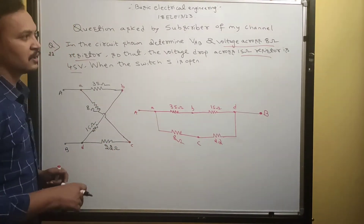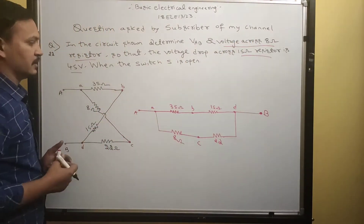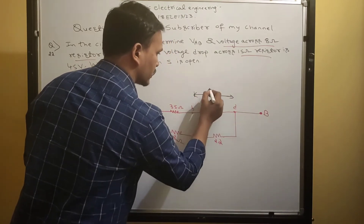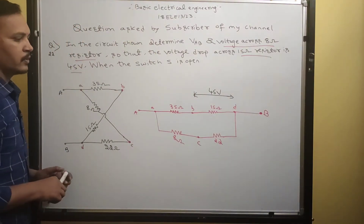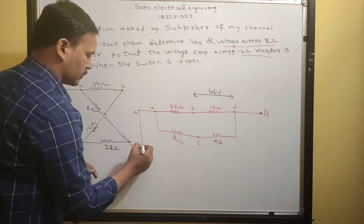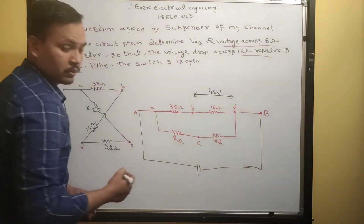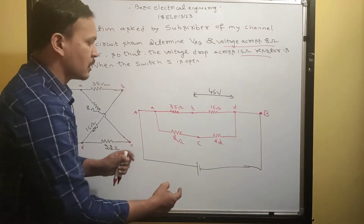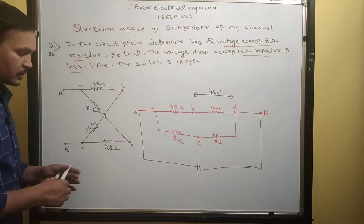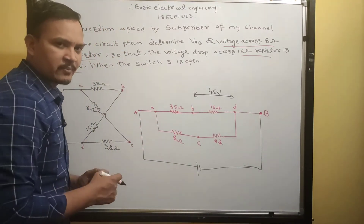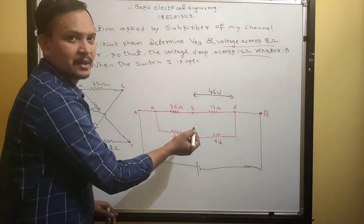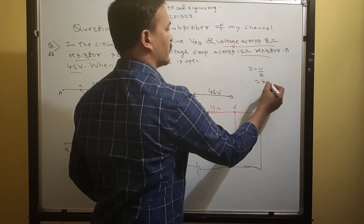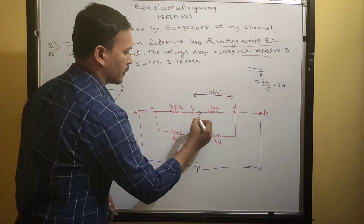Now all students can see how to proceed. They are given voltage across 15 ohm resistance is 45 volts. The 35 ohm and 15 ohm resistances are connected in series, so the same current flows through both. Since we know the voltage and resistance of the 15 ohm resistor, we can find the current: I = V/R = 45/15 = 3 amperes flowing in that resistor.